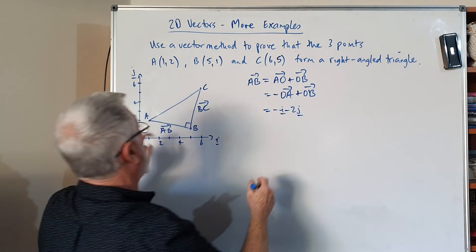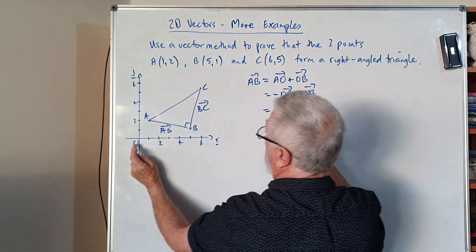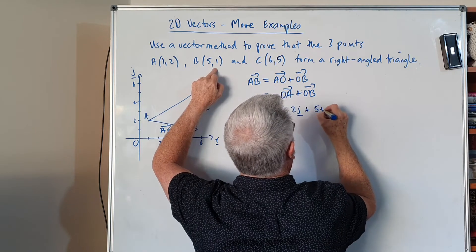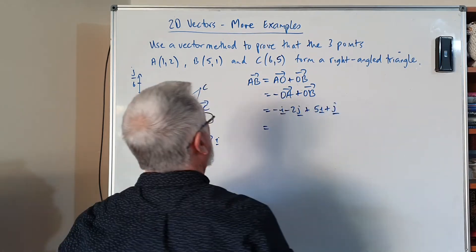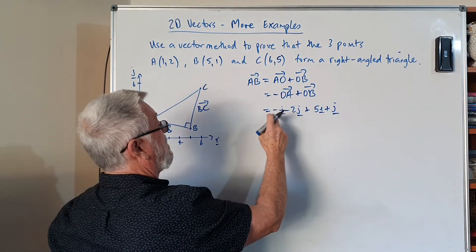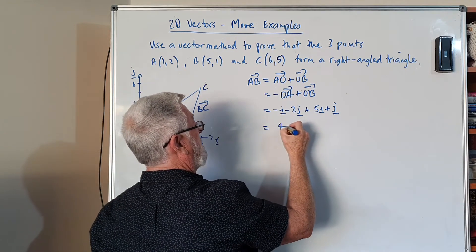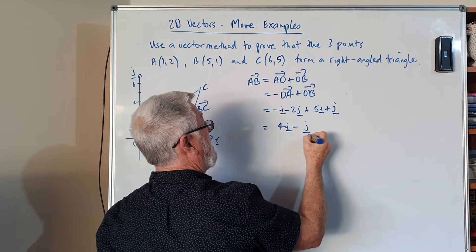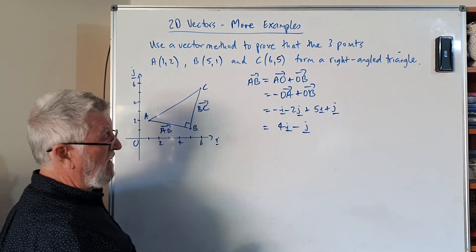So if that makes sense to your brain, if you write it that way, and then they go from the origin over to B, I've got that one there, so I've got five i plus j. Let's just collect like terms, so I've got minus i plus five i is four i. I've got minus two j plus j is minus j.